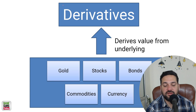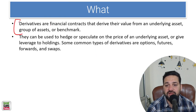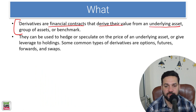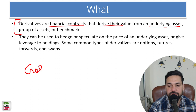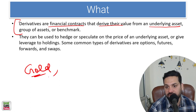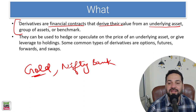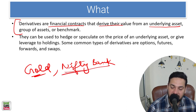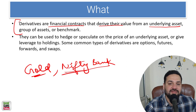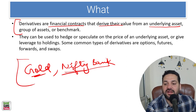So first of all, what is a derivative? Derivatives are financial contracts that derive their value from an underlying asset. For example, gold — there are gold derivatives. Or you might have seen Nifty Bank derivatives or Nifty derivatives. The value of these derivative contracts is dependent upon the value of the underlying asset.